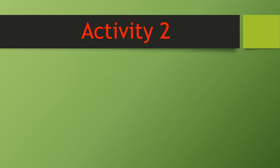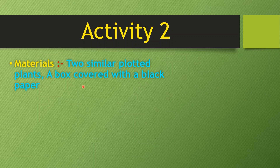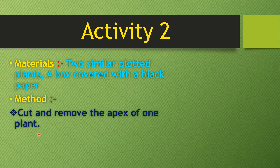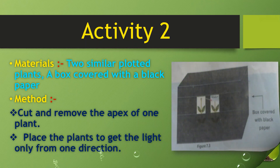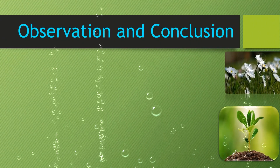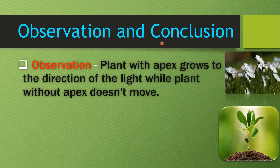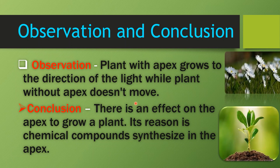Then we will do another activity. You need two similar potted plants and a box covered with black paper. Cut and remove the apex of one plant, then place the plants so they receive light from only one direction. You can see the plant with the apex grows toward the direction of the light, while the plant without the apex doesn't move. The conclusion is that the apex has an effect on plant growth, and the reason is a chemical compound.